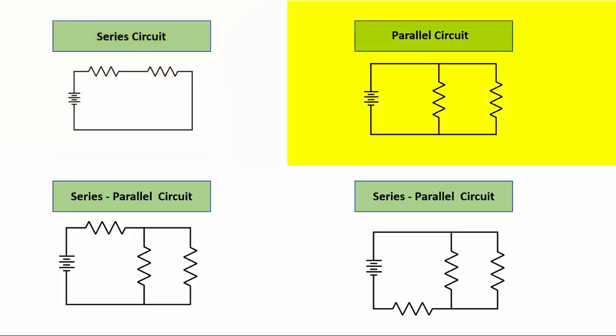We also have parallel circuits, where there's a separate path for each load. The advantage of this is that each resistor or each load will have source voltage available to it. Instead of sharing the voltage like in series, the full source voltage is available to each leg or each branch of the circuit.